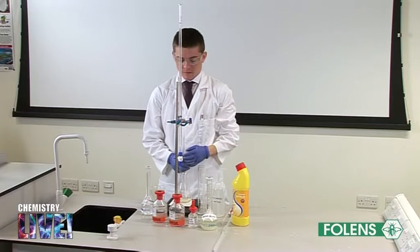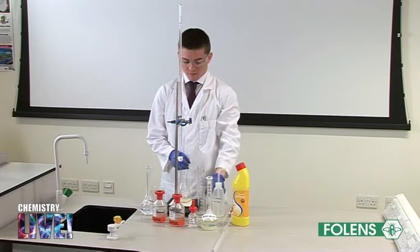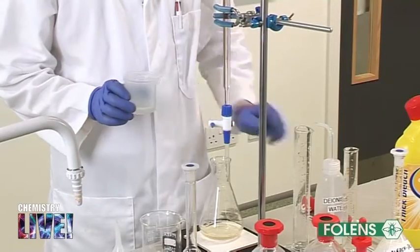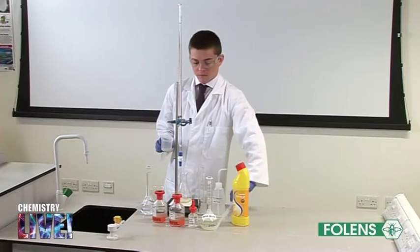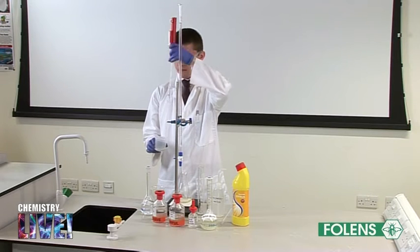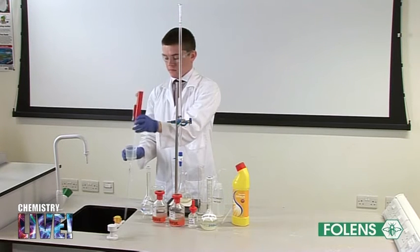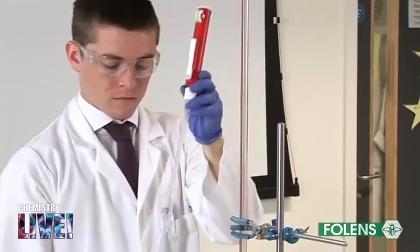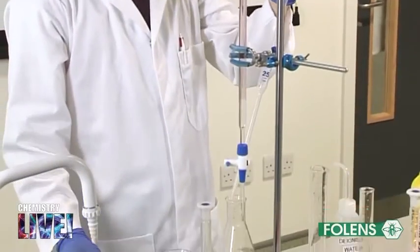100 cm³ approximately of the diluted bleach was poured into a beaker. Using a pipette filler, the pipette was washed with a small amount of this solution. Then, using a pipette filler, 25 cm³ of the bleach solution was pipetted into the conical flask.